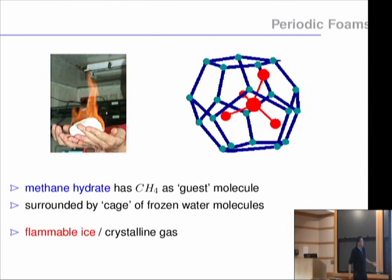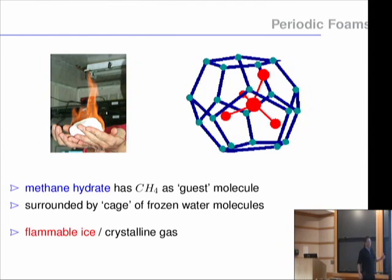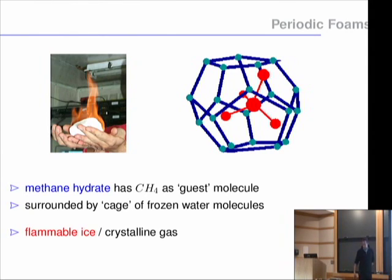These are the water molecules forming the water crystal, and in the middle is the methane hydrate. When you light it, it starts melting, the methane hydrate is a gas and it burns, which forces the further melting process. For this reason the whole thing is sometimes called flammable ice or crystalline gas.